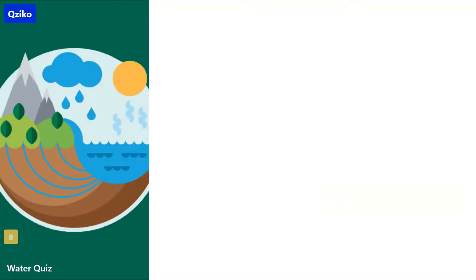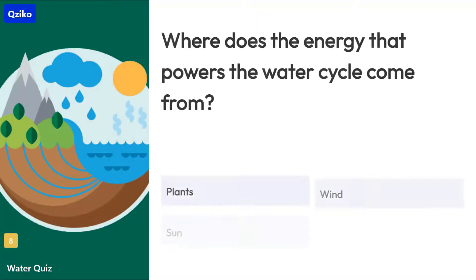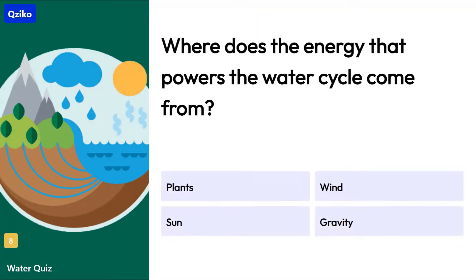Quiz number 8. Where does the energy that powers the water cycle come from? The right answer is the sun.